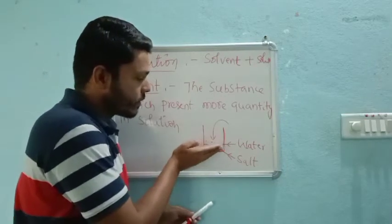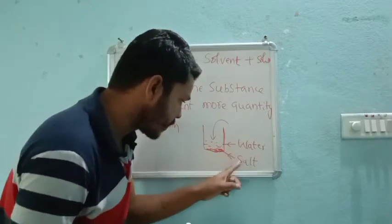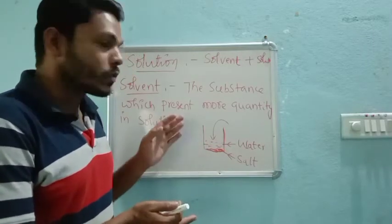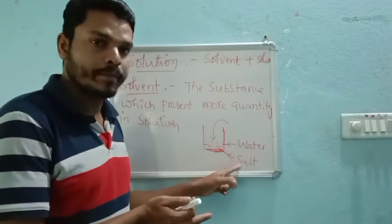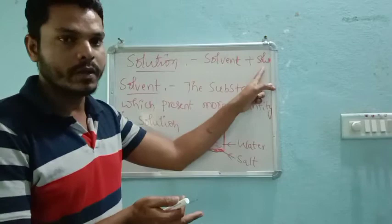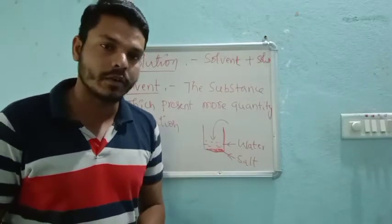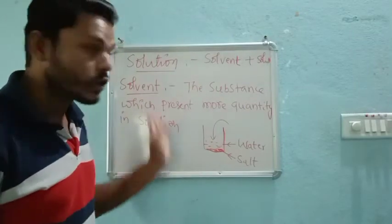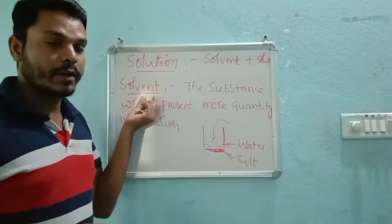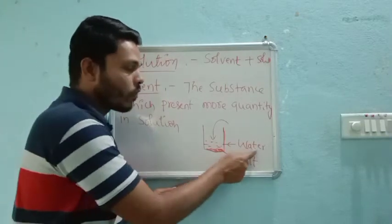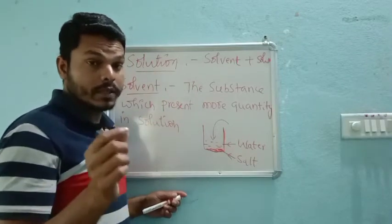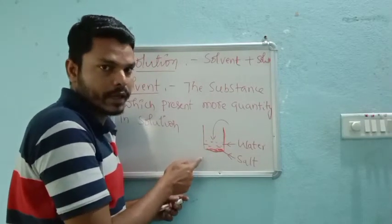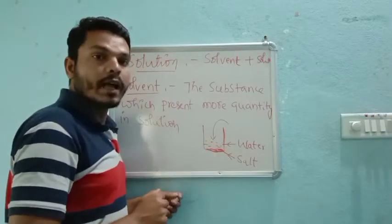If we compare water and salt, water is more as compared to salt. It is a mixture of solvent and solute, but we need to identify which is which. According to the definition of solvent — the substance which is present in more quantity in a solution is called the solvent. So here, water will be the solvent because water is present in more quantity.